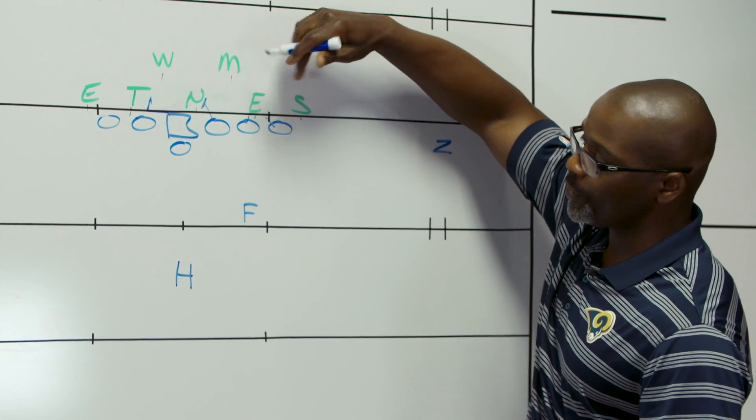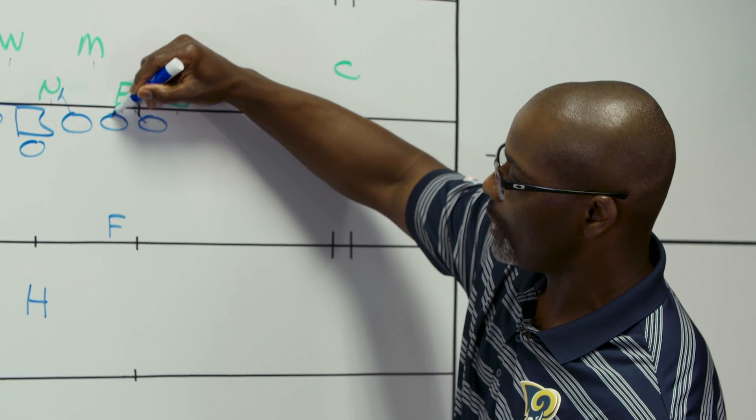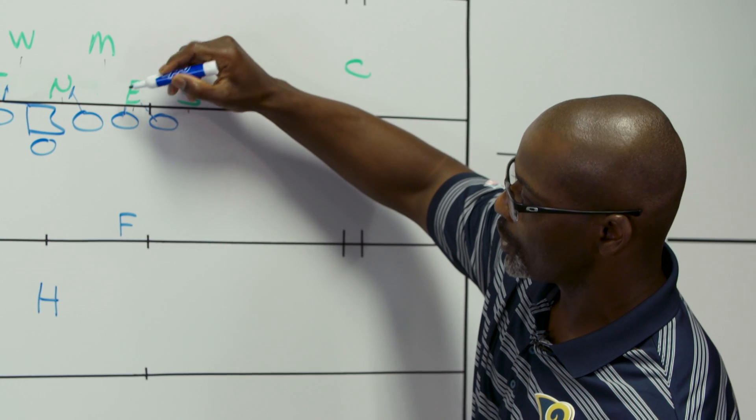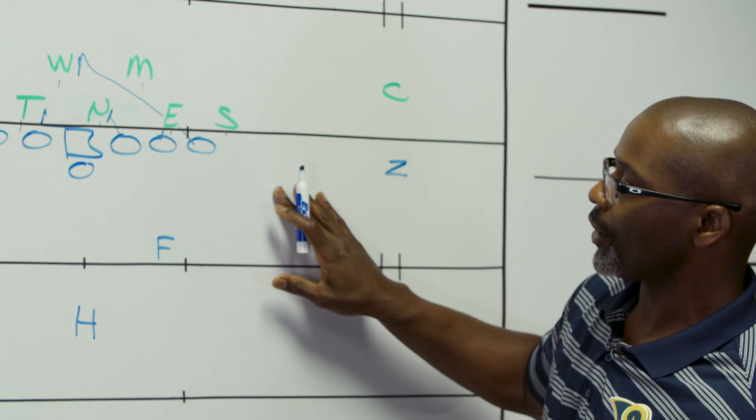And here's our double team that we're trying to create. In a perfect world, we say that this defensive end is responsible for the C gap. So we're going to double team him to get some good push. And they're going to work their combination block back here to the wheel linebacker.